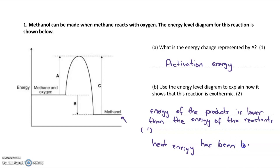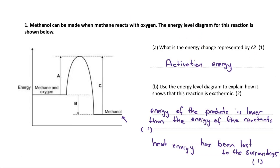When energy is lost to the surroundings, that causes a rise in temperature. So exothermic reactions are reactions that cause a rise in temperature. In endothermic reactions, the products would have a higher energy than the reactants, because heat would be taken in by the system — the chemicals, the molecules — from the surroundings. In endothermic reactions, we would have a drop in temperature, so it would get colder.